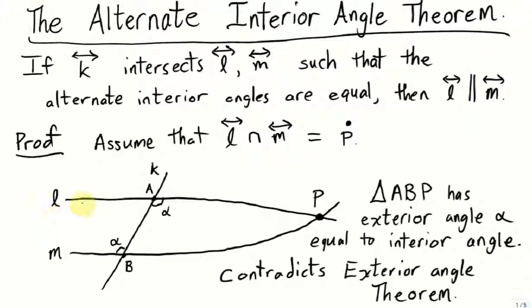The proof is pretty straightforward. We'll do a proof by contradiction. So if they're not parallel, then we'll assume that lines L and M intersect in some point P.